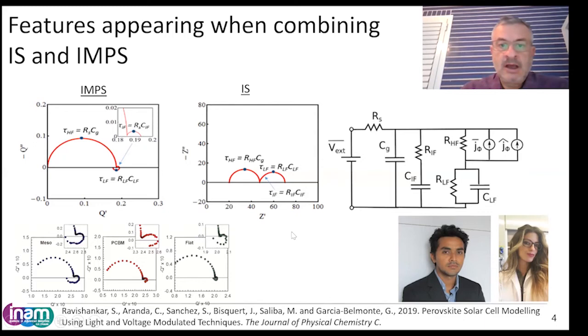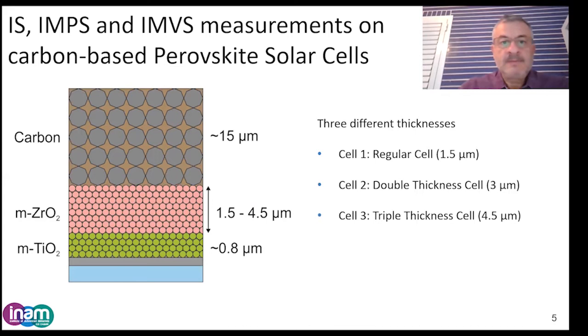This problem has been analyzed previously in a work by Sandheep Ravishankar and Clara Aranda in our lab with lead bromide perovskite solar cells. It was shown that IMPEs shows three features while impedance spectroscopy shows only two features in the spectrum, so the equivalent circuit is more complex with a third RC line. But the time constants related to this new line overlap, so you can see only two arcs in the spectrum but in reality it has three.